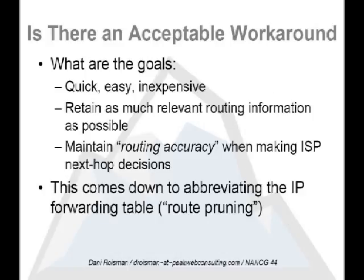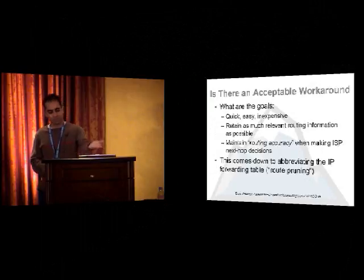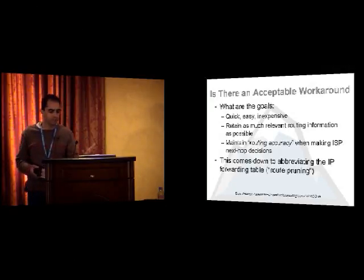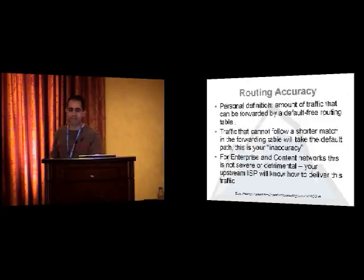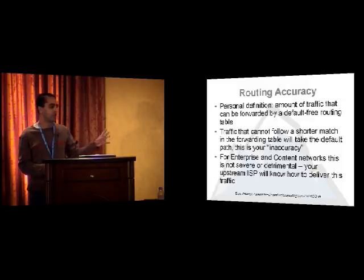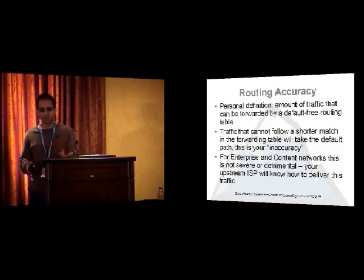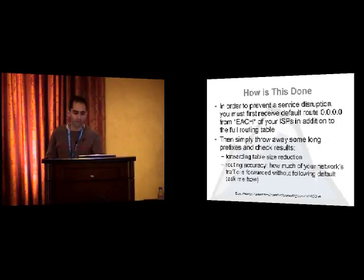The short answer: you've got to abbreviate the routing table and prune your BGP routes. What I define as routing accuracy is how much traffic we can still forward without following the default route. Anything that can't follow a shorter match and goes out the default is considered inaccurate. It's not the end of the world — it's not going to harm your end users, because traffic will go to your upstream ISPs and they carry the full table and know how to deliver it.